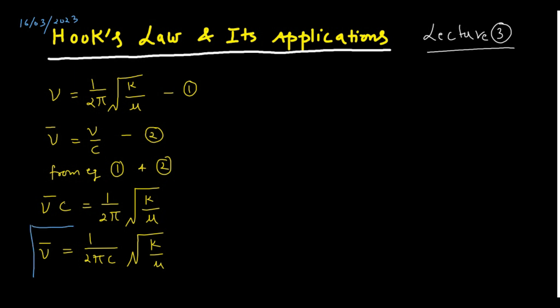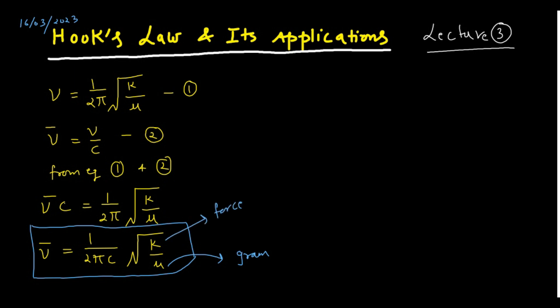Rearranging gives: nu-bar equals 1 upon 2πc times the square root of k over mu. This is Hooke's Law. You should know the conversion — the reduced mass mu is given in grams, and k (or f) is the force constant given in dynes per centimeter. The speed of light c is taken as 3×10¹⁰ cm/s since calculations are done in centimeters.